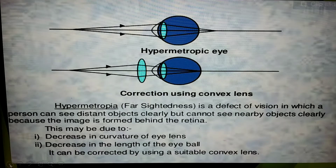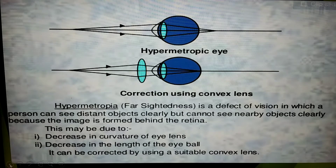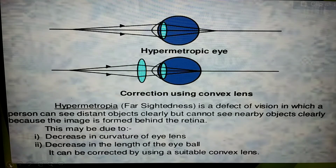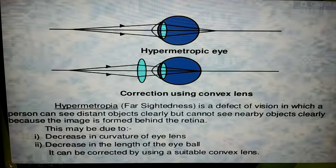Next, long-sightedness, or hyperopia, or farsightedness. In this defect of vision, people can see distant objects clearly but cannot see nearby objects clearly because the image is formed behind the retina. This may be due to a decrease in the curvature of the eye lens and a decrease in the length of the eyeball. It can be corrected by using a suitable convex lens.